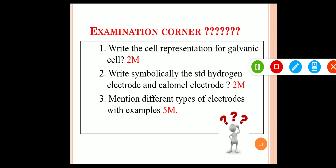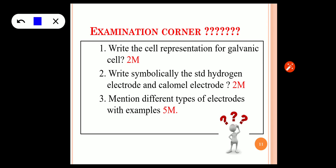Now for the examination corner — possible questions asked in examinations. First: represent or write the cell representation for a galvanic cell — a two-mark question, very important. Second: write symbolically the standard hydrogen electrode and calomel electrode — you should know how to represent different types of electrodes. Third: mention different types of electrodes with examples — a five-mark question. I have described all six types of electrodes, so you can give five or six types as examples, along with their representations.